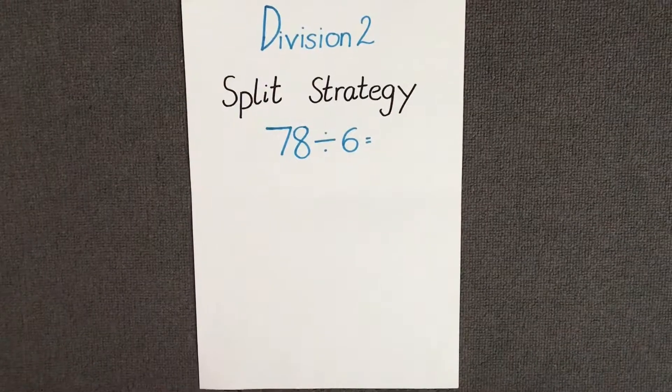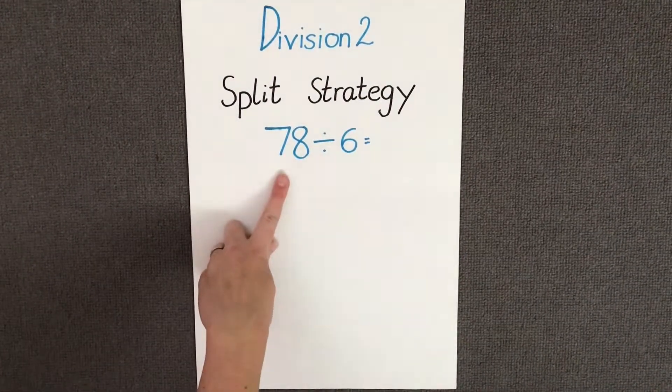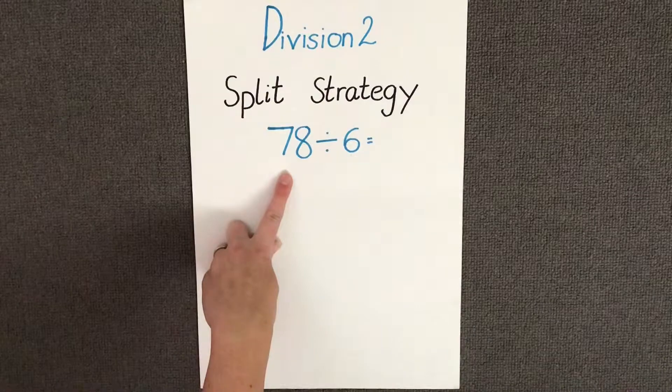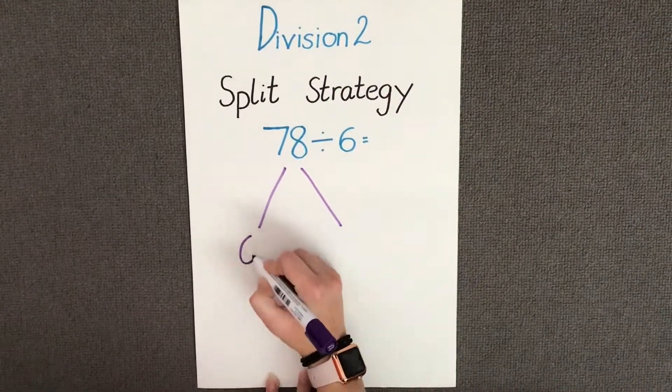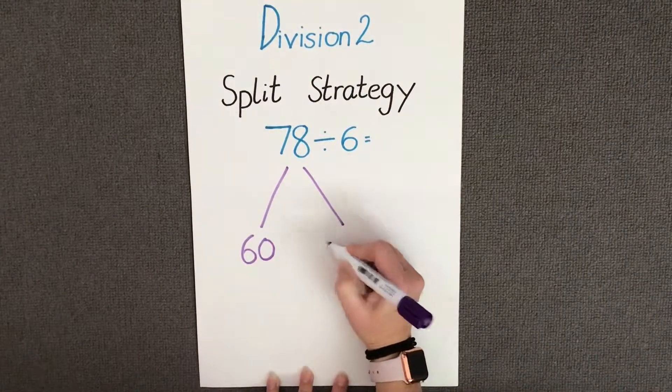First we need to partition the number 78 into tens and ones so that the number 6 will divide into it equally. We're going to partition it out. We're going to have 60 and we're going to have 18.